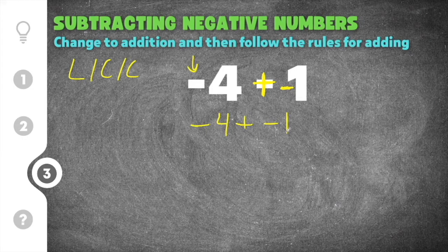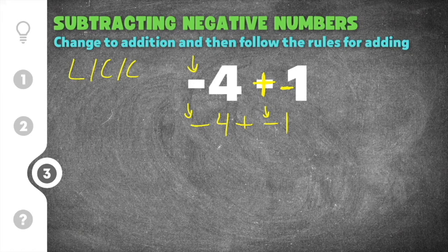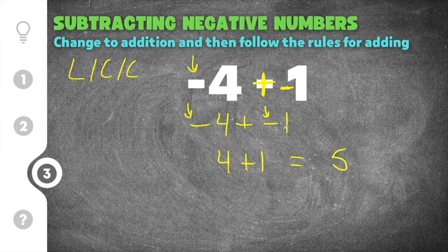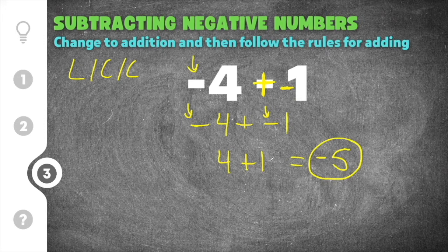Now we're adding two negative numbers together — they both have the same sign, so we add the two numbers together and keep the sign. We add four plus one, which is five, and we keep the sign, which is negative. So for negative four plus negative one, it's just four plus one because they have the same sign, which is five, and we keep the negative sign. Our final answer is negative five.